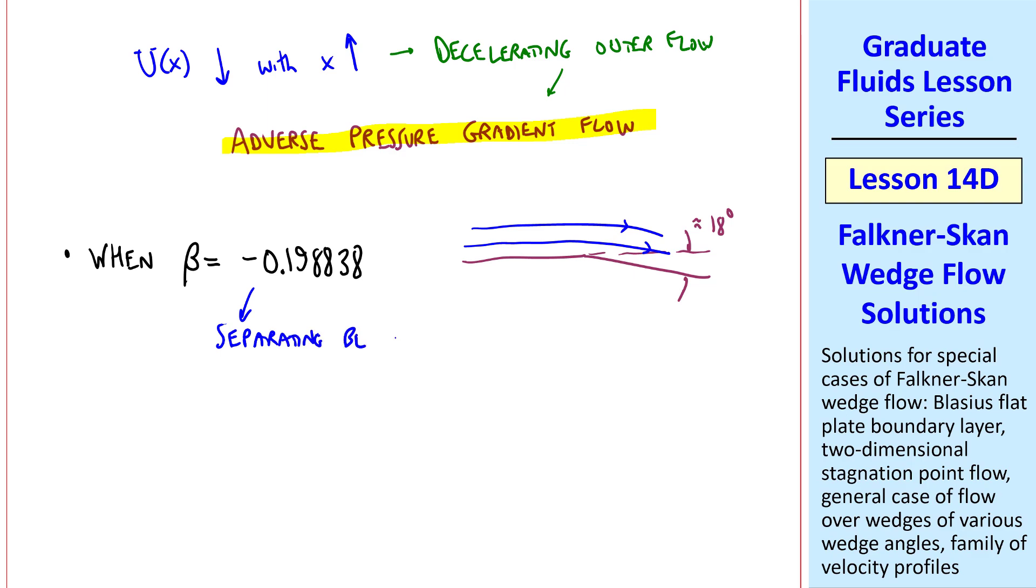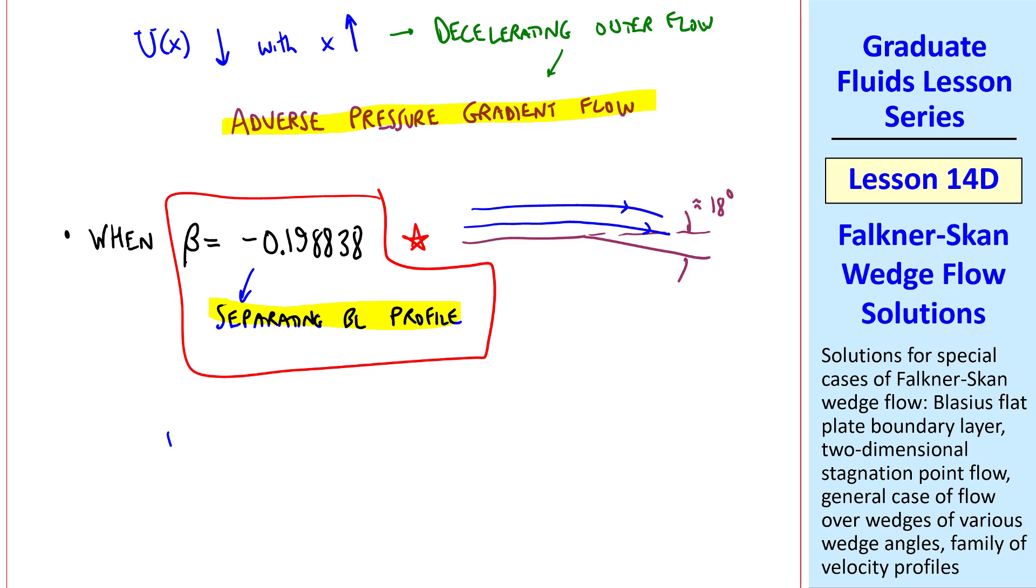This corresponds to the separating boundary layer profile. I'll just comment here, that we can generate solutions of the Falkner-Skan similarity equation for any beta using our Runge-Kutta code. Note that for each case, you must guess f double prime of 0, like we did for the Blasius case, and iterate until you can satisfy the outer flow boundary condition at infinity, which is typically around eta equal 5 or so.